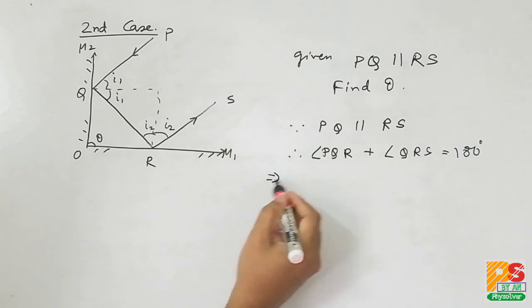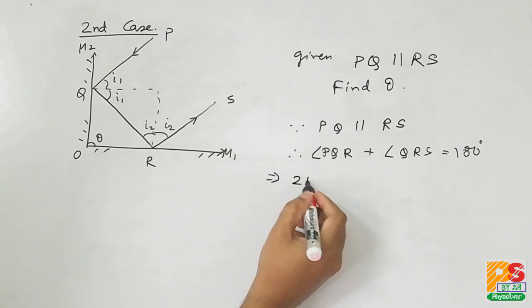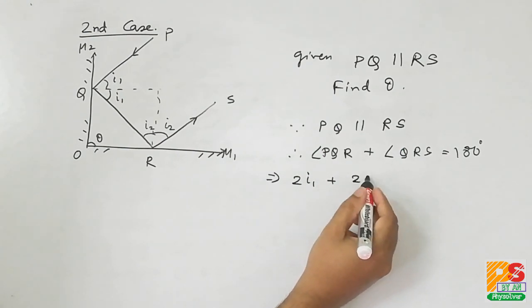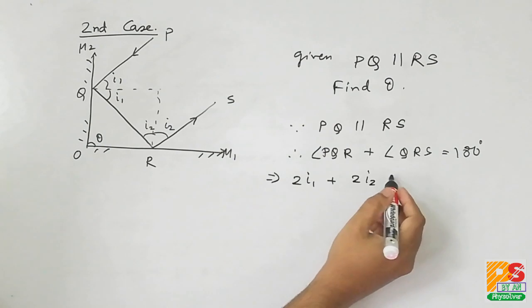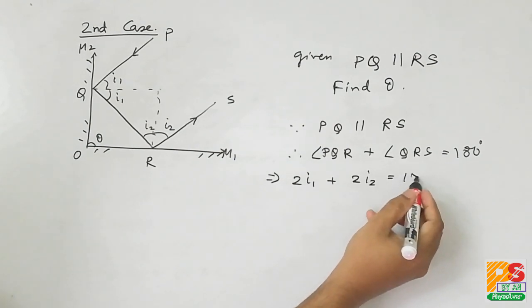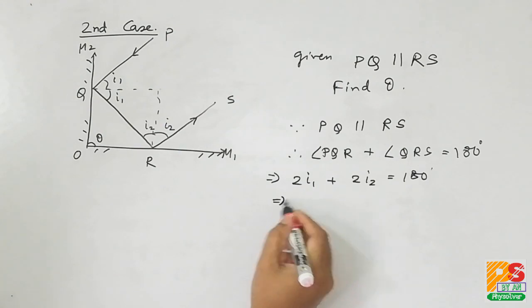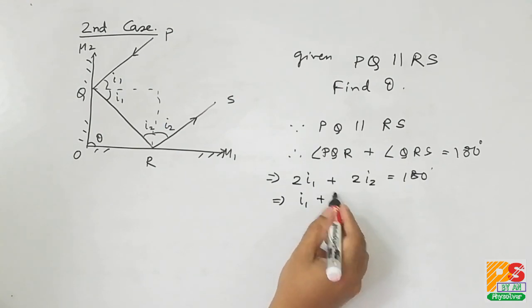Now see, angle PQR is nothing but 2I1, and angle QRS is nothing but 2I2. Therefore we get I1 plus I2 as 90 degrees.